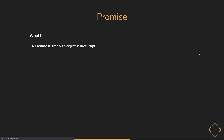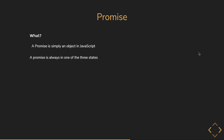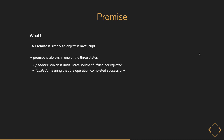Technically, a promise is simply an object in JavaScript, and a promise is always in one of three states: pending, which is the initial state — neither fulfilled nor rejected; fulfilled, meaning the operation completed successfully; and rejected, meaning the operation failed.